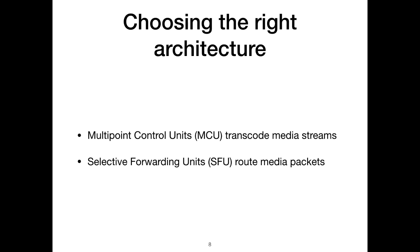What you would want to use is a selective forwarding unit such as the GT Video Bridge. The main idea is to do media packet routing instead of transcoding. It turns out it's not as simple as an IP router, but it's pretty lightweight — especially when compared to transcoding.